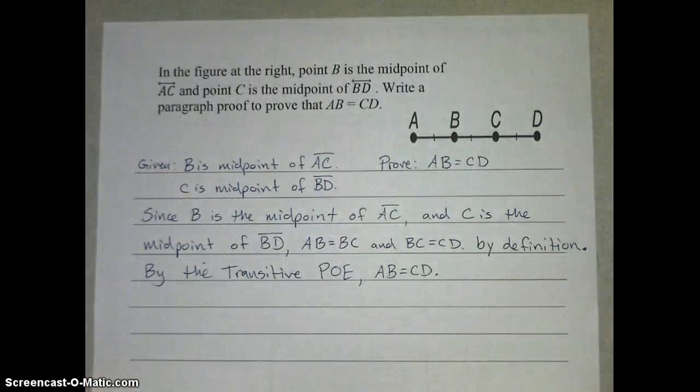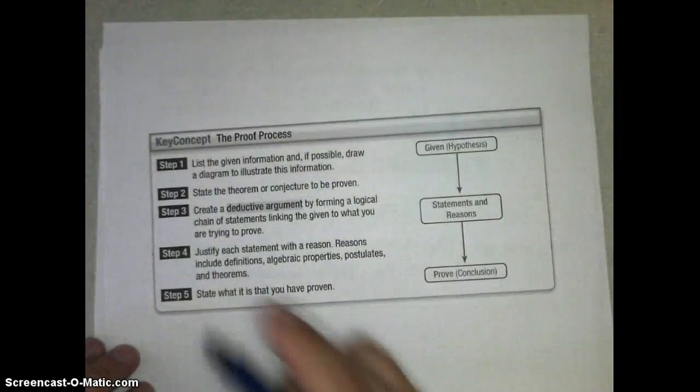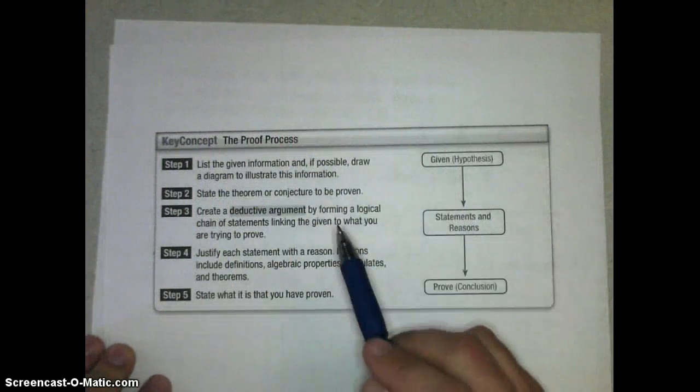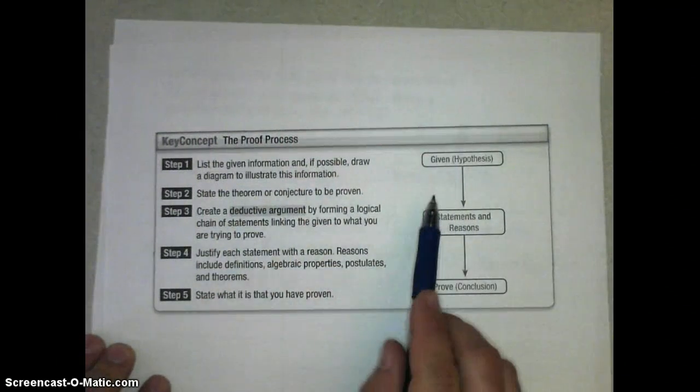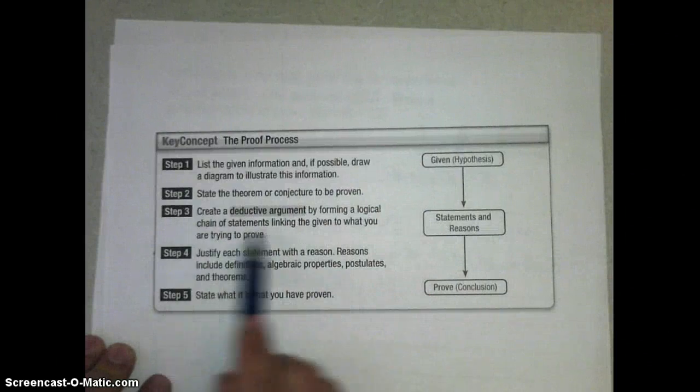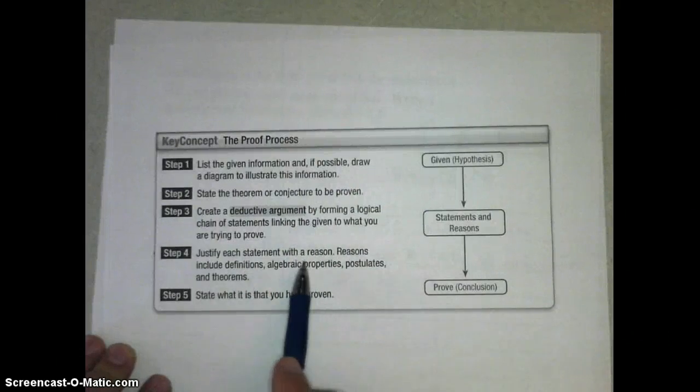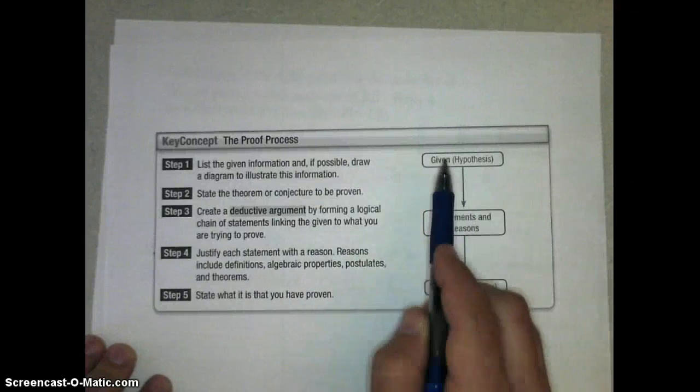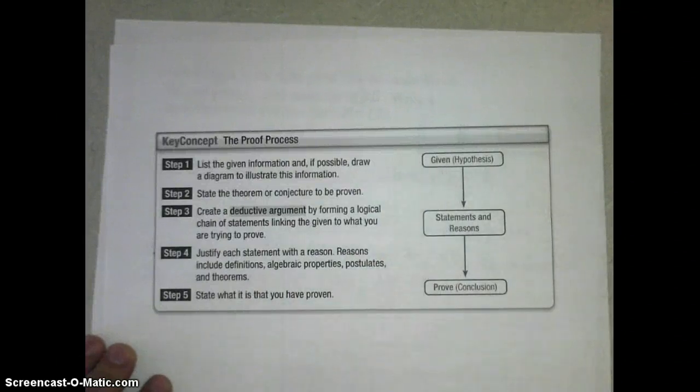Alright, that's how we put together paragraph proofs. I do want to remind you about what the proof process looks like. You always want to start by stating your given information and drawing a diagram if it helps. Then state what it is you're trying to prove. Then we create our argument and then we also want to justify every statement we give with a reason. And then lastly we want to make sure we have proven what it is we set out to prove from step 2. So that's it.